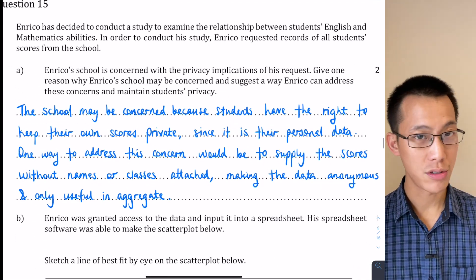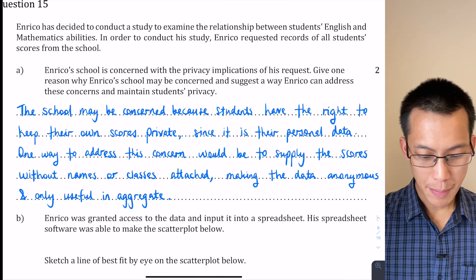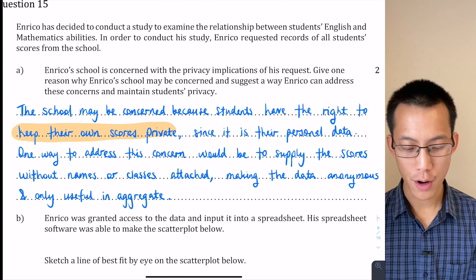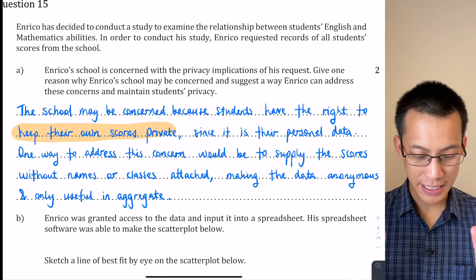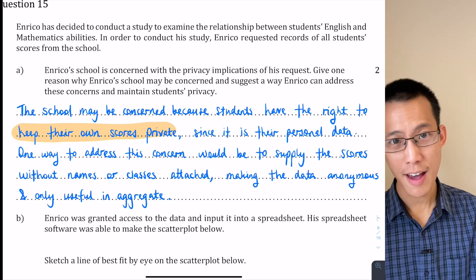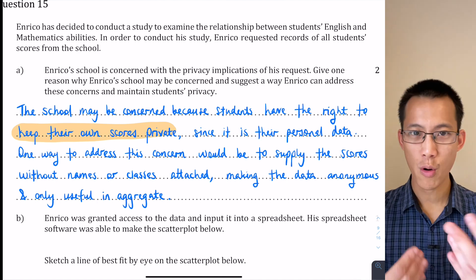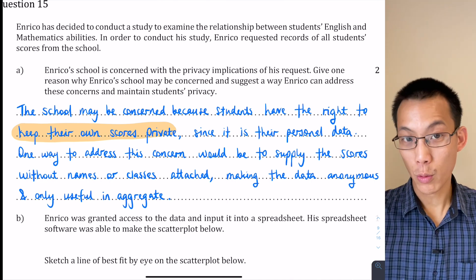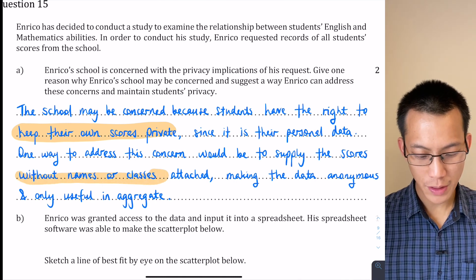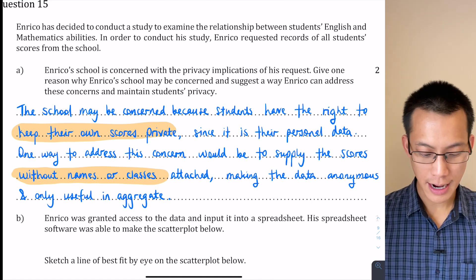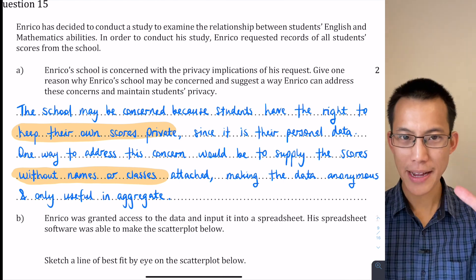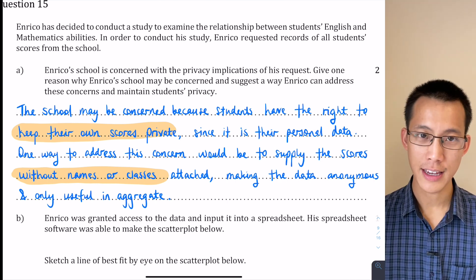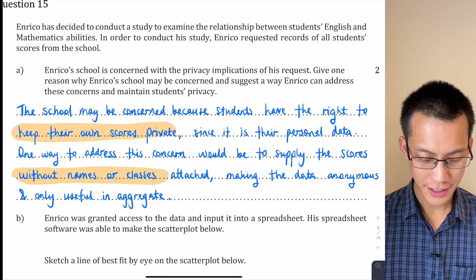So here's what I've written and most students had a response like this: the school may be concerned because students have the right to keep their own scores private, and that's the key there - that each person kind of has ownership over their own score. The scores in general are no one's data, but the particular scores like saying I scored 30% and you scored 75% - you having that piece of data is not something that belongs to me or vice versa, so that's why it's about keeping their own scores private. It's personal data. So the way to address this concern would be, one of the ways, is to supply the scores without names or perhaps without even their class attached to them. So we call that anonymizing the data, and that way what you've got is an aggregated set of data - it's just like a big clump of data and you can't say oh this belongs to this person, this belongs to another person. People can't be identified by the data that you can see here in this data set that's provided to Enrico.